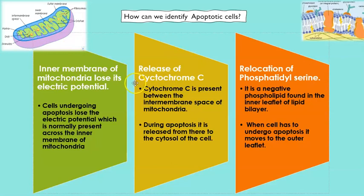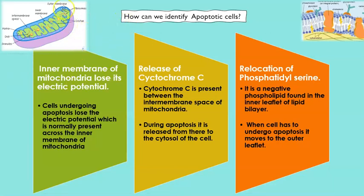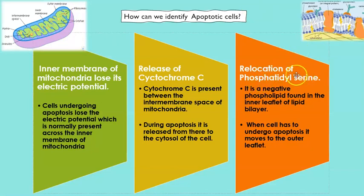The second signal is the release of cytochrome C. Cytochrome C is normally present in the inter-membrane space of the mitochondria. During apoptosis, as the membranes become permeable, cytochrome C moves out from the inter-membrane space into the cytoplasm of the cell. This movement of cytochrome C into the cytoplasm acts as a signal identifying the cell as apoptotic.